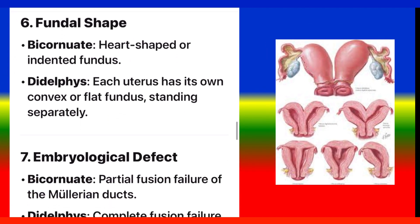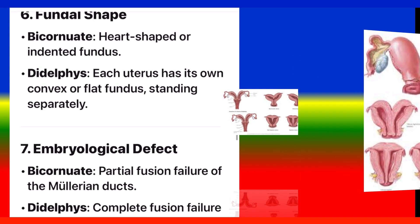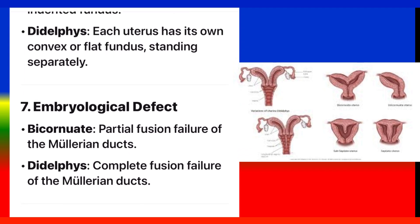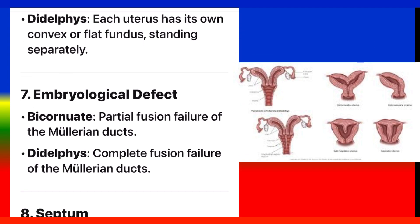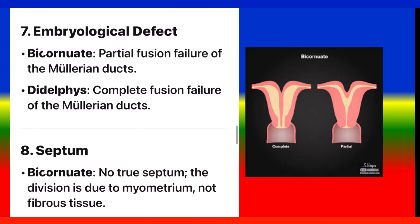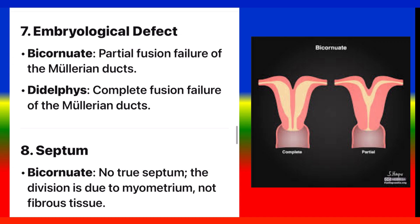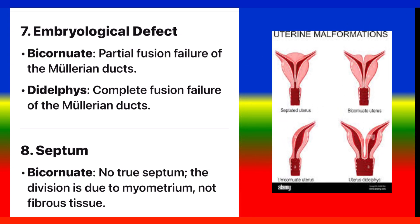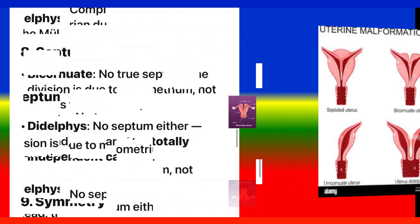Point 6: Fundal shape. Bicornuate: heart-shaped or indented fundus. Didelphys: each uterus has its own convex or flat fundus, standing separately. Point 7: Embryological defect. Bicornuate: partial fusion failure of the Müllerian ducts. Didelphys: complete fusion failure of the Müllerian ducts.